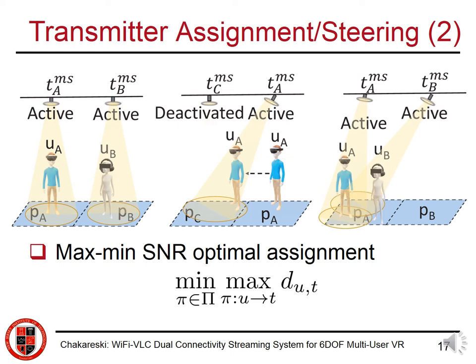Here is an illustration of how the transmitter assignment steering works. Initially, each user is assigned to the transmitter in the cell in which the user resides. When a user moves from cell A to cell C, the originally assigned transmitter will follow it to the next cell. Furthermore, multiple users may be located in a cell, in which case they will be creating interference with each other via their respective beams. In this context, we assign every user to the transmitter that leads to the maximum signal-to-noise ratio for the user.